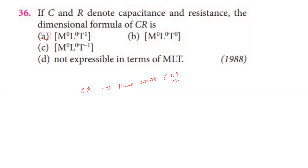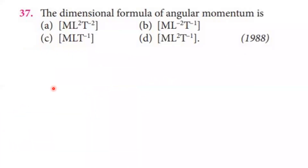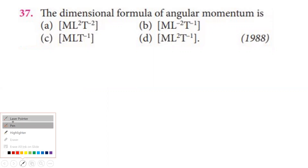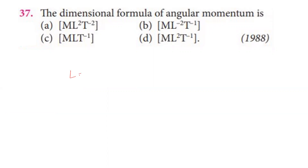Time constant confirmed. Next question: dimension of angular momentum. Angular momentum equals momentum times perpendicular distance. Momentum dimension is MLT⁻¹, perpendicular distance is L, so angular momentum is ML²T⁻¹. The fourth option is the correct answer.